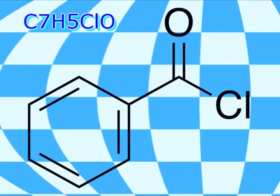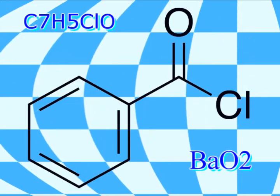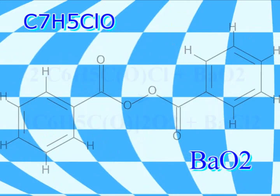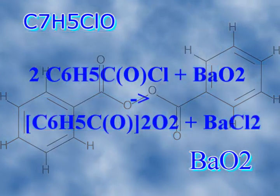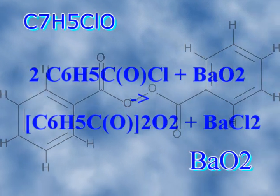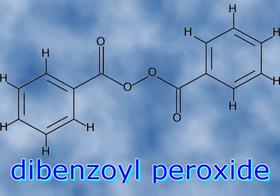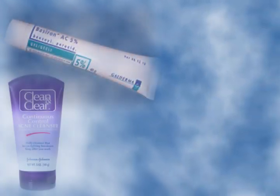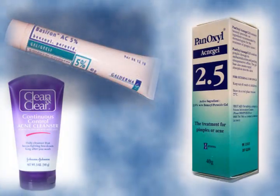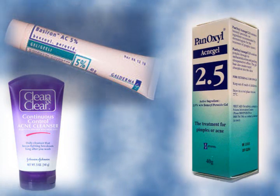Benzoyl peroxide was discovered in 1920 by Jack Breitbart, and was created to treat acne. Nowadays it's created by treating benzoyl chloride with barium peroxide. It has also been called dibenzoyl peroxide, and many of today's acne treatment products use this chemical.